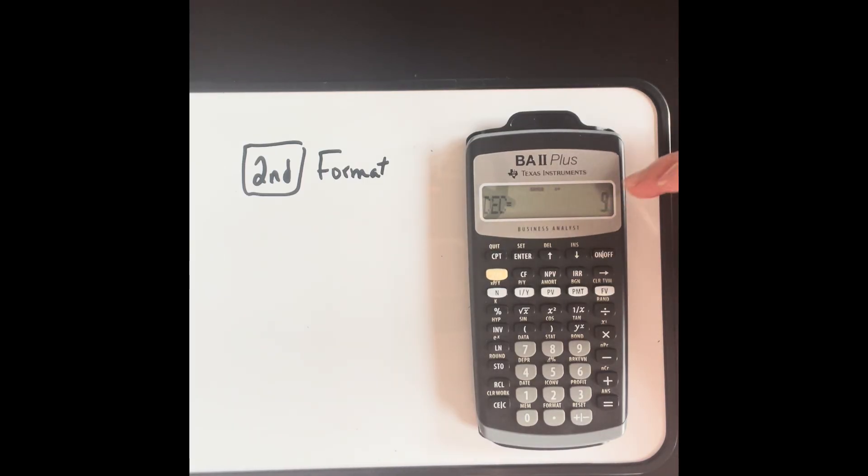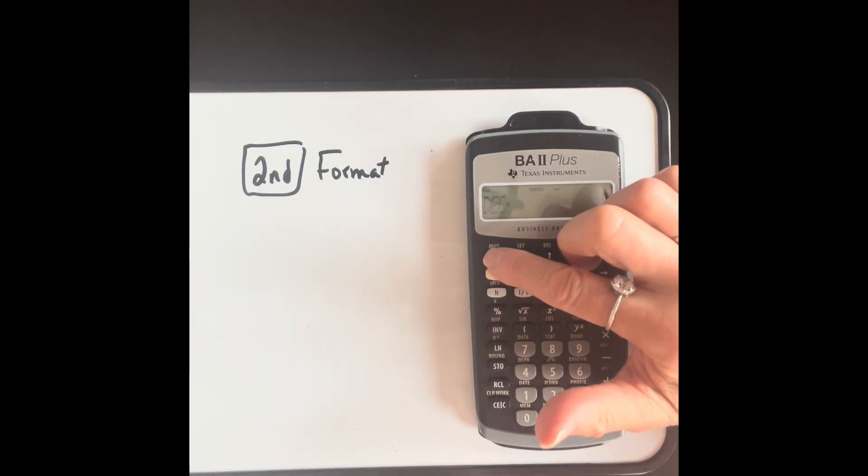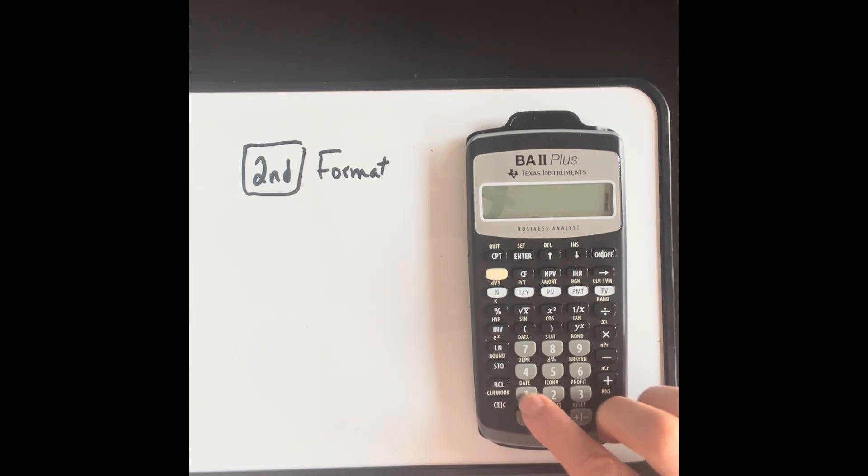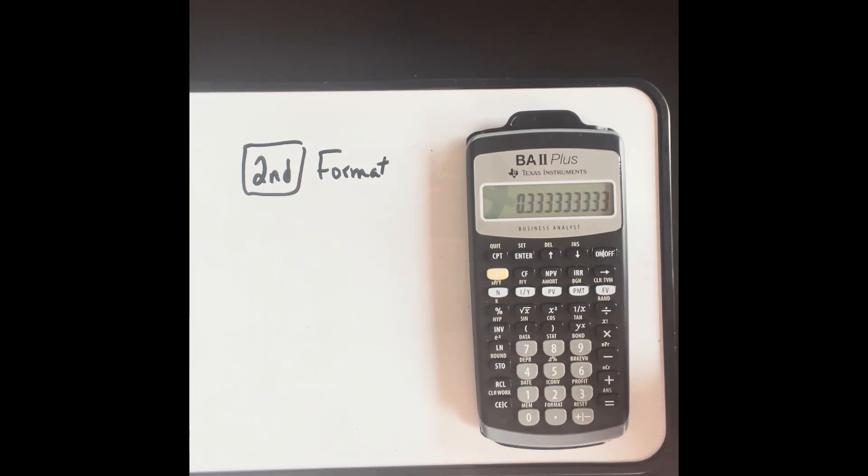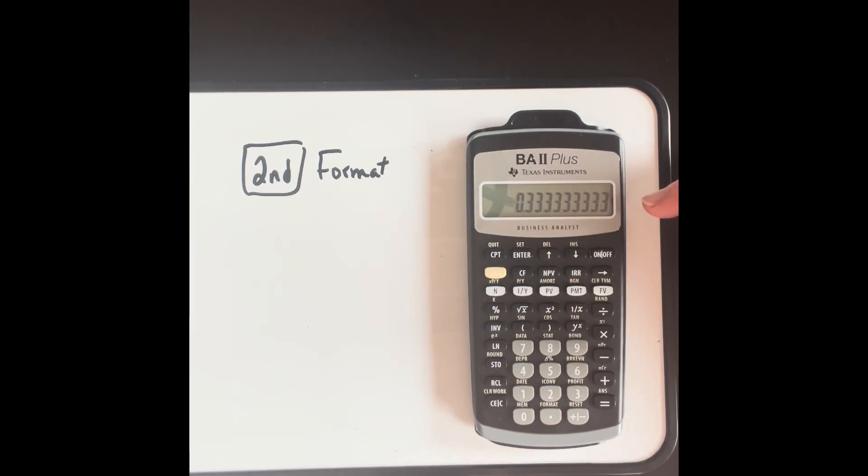So it moves on the display depending on how large or how small the number is. However, I will never see more than 10 digits on the display. Let's quit this, and I'll just show you what I mean. So I'm going to go second quit. If I did 1 divided by 3 equals, it shows me more decimal places. However, the maximum number of digits that can be displayed on this display is 10.